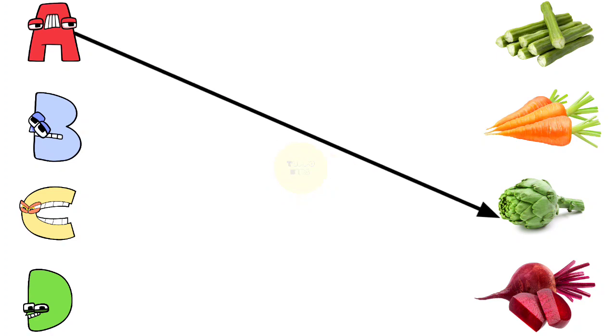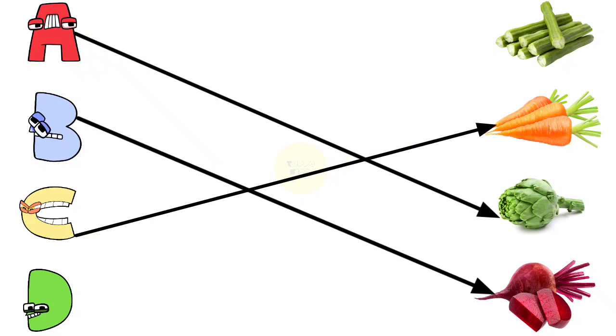A for Artichoke, B for Beetroot, C for Carrot, D for Drumstick.